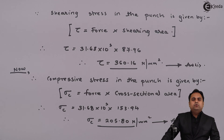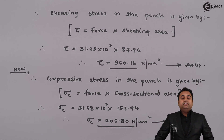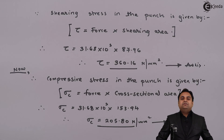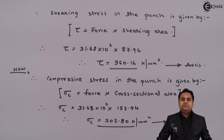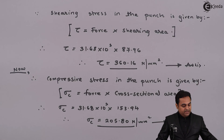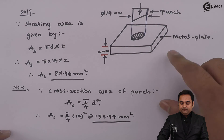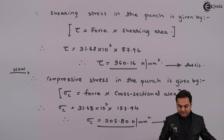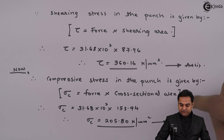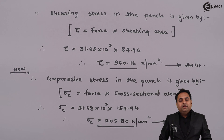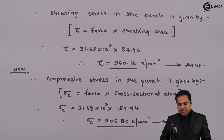So in this problem we were asked to calculate two things: the shear stress induced in the punch and the compressive stress. We understood the meaning of each by drawing a diagram, and finally calculated the values — shear stress and compressive stress induced in the punch when a hole is punched in a metal plate. With this we complete the problem.